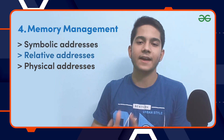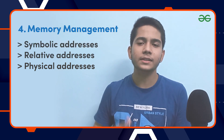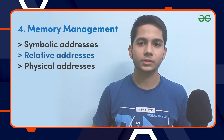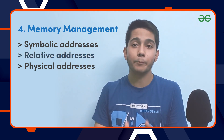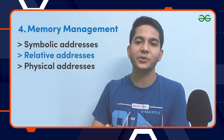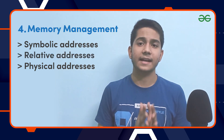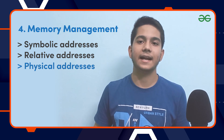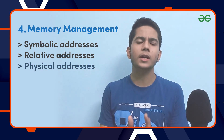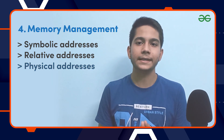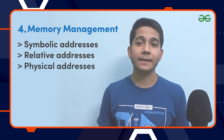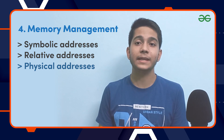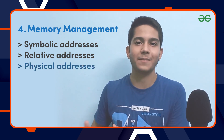The second address type is relative address — during the compilation process, the compiler converts a symbolic address into a relative address. The third is physical address, where the loader takes responsibility to generate these addresses at the time when the program is being loaded into main memory.